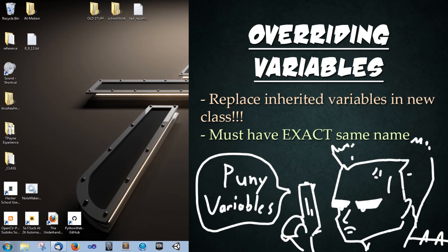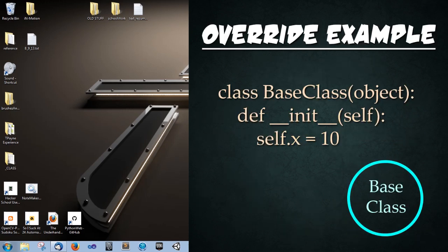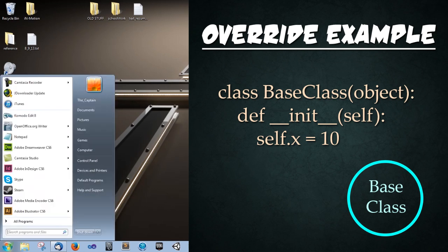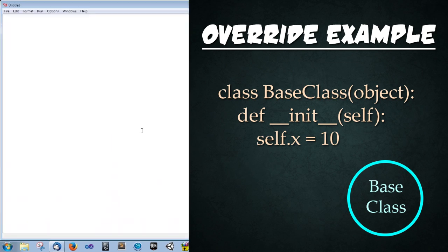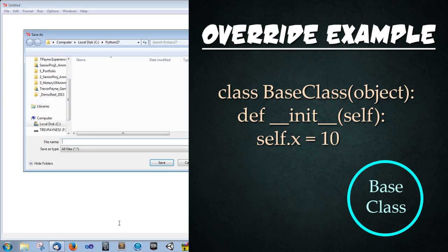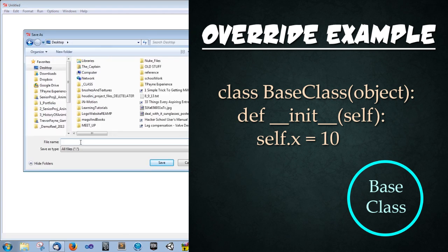So overriding variables, what is this? The replacement of puny variables. Terrible joke. When a variable is established in a base class, it can be overridden in inheriting classes. Note that they must be the exact same name. If there is any capitalizations that's different, a different variable will be created. So let's go ahead and start with an example. Let's crack open idle. First things first, let's go ahead and save this file on our desktop. It's going to be called overriding example.py.